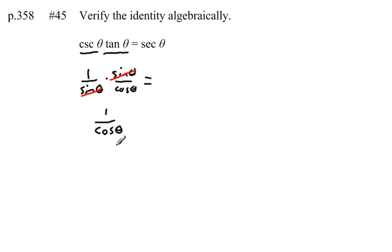I also know that 1 over cosine is equal to secant. So 1 over cosine of theta is equal to the secant of theta, which is exactly what we're trying to set this equal to.